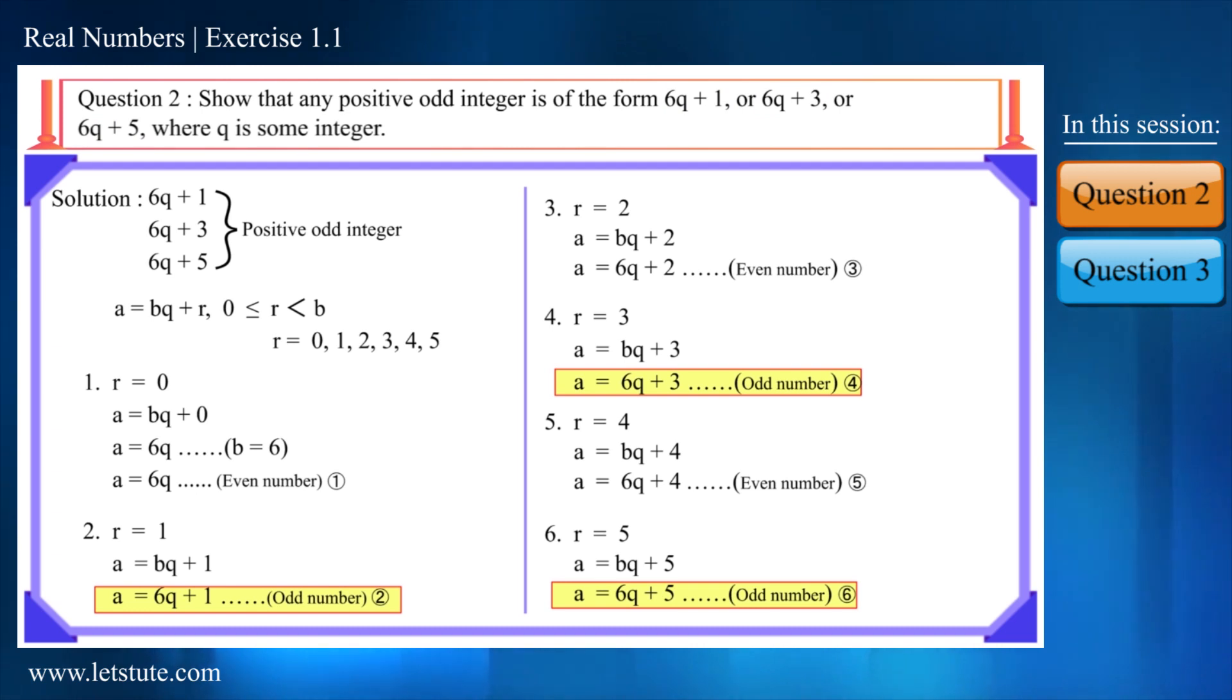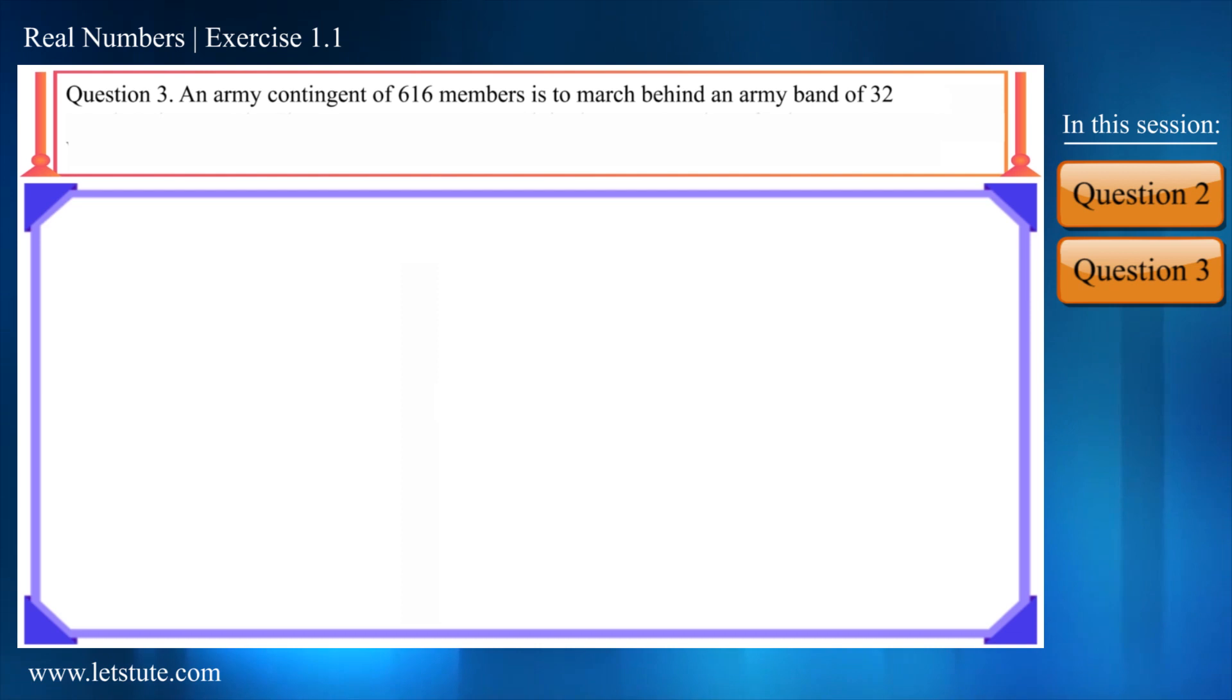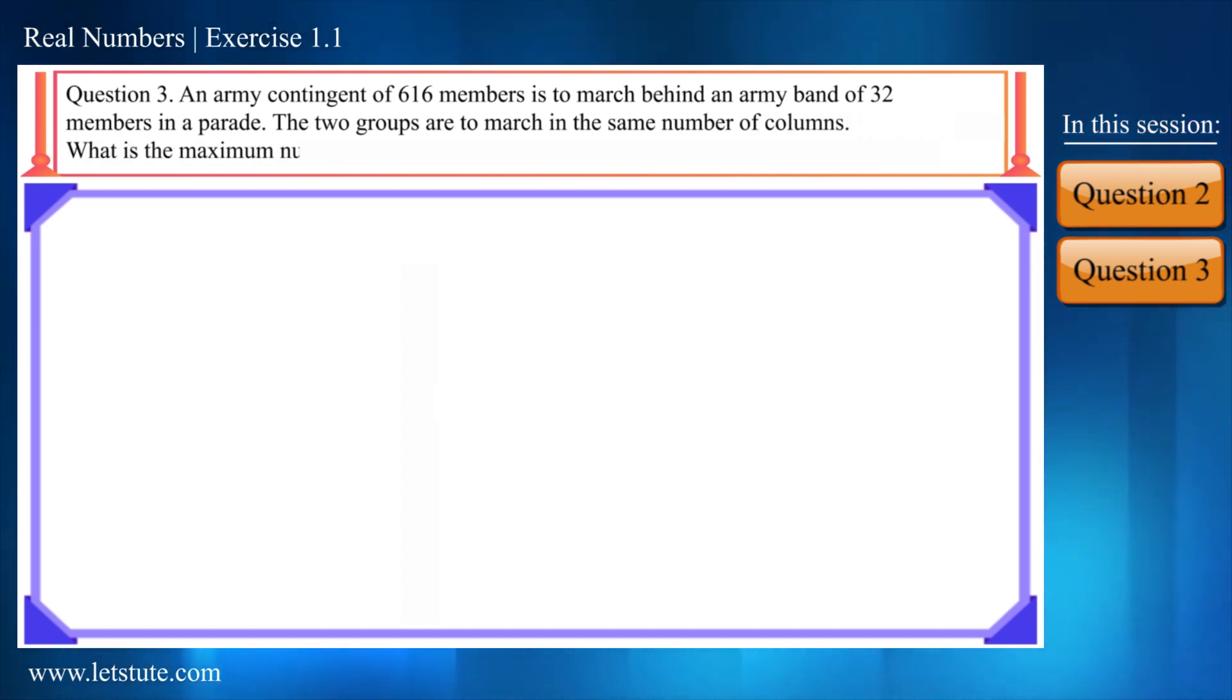Let's move on to the third question. An army contingent of 616 members is to march behind an army band of 32 members in a parade. The two groups are to march in the same number of columns. What is the maximum number of columns in which they can march?